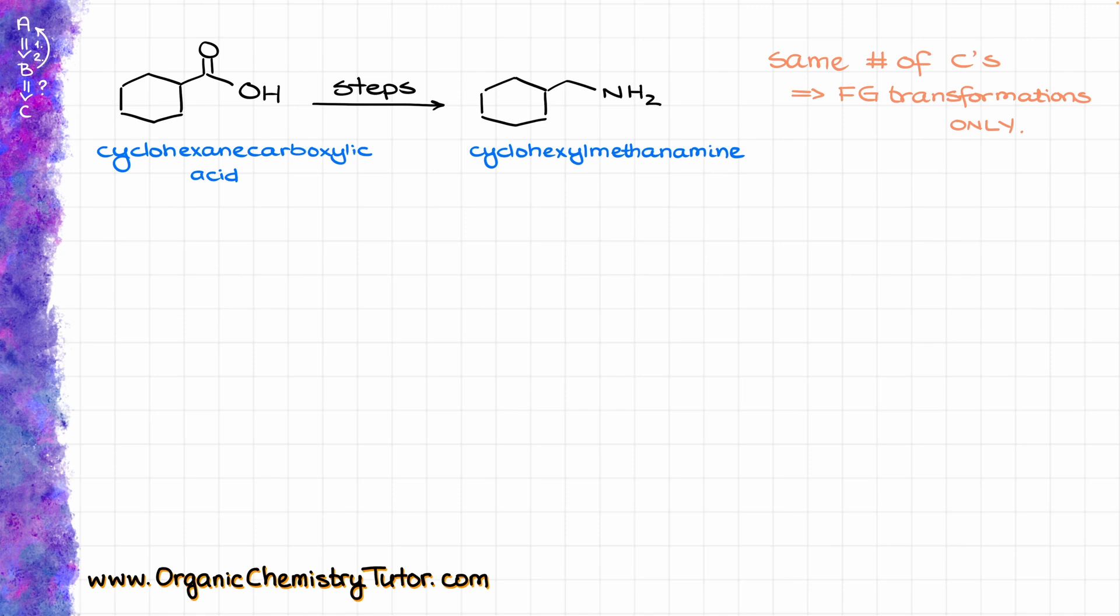And the only thing that we are going to be doing here is the functional group transformation. So let's do our retrosynthetic analysis and think about this potential synthesis sequence in reverse like we would normally do in cases like this. So here I can see that my final product is a primary amine.